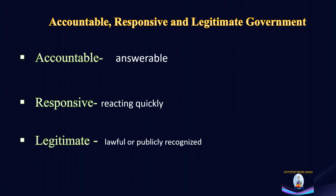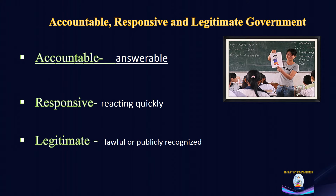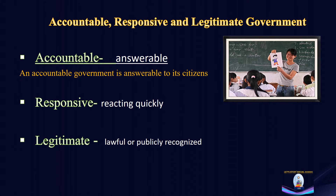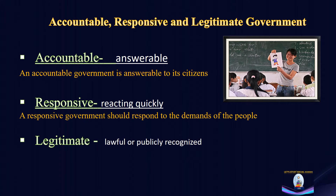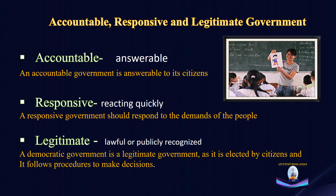Before we move on, let's get the meaning of these words. The first word is accountable, which means answerable. Suppose you are the leader of the class — you will be accountable for your class in the absence of your teacher, meaning if anything goes wrong you will be answerable. In the same way, an accountable government is answerable to its citizens. The second word is responsive, meaning reacting quickly — a responsive government should respond quickly to the demands of the people. The third word is legitimate, which means lawful or publicly recognized. A democratic government is legitimate because it is elected by citizens and follows procedure to make decisions.